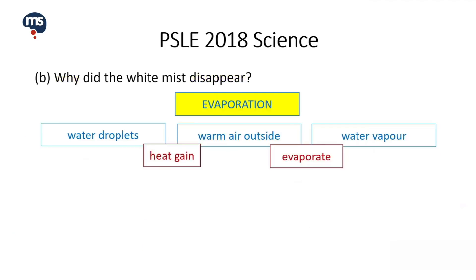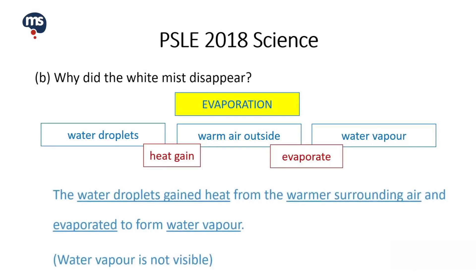Let us take a look at the answer. The water droplets gained heat from the warmer surrounding air and evaporated to form water vapour. The reason for its disappearance was that water vapour is not visible.